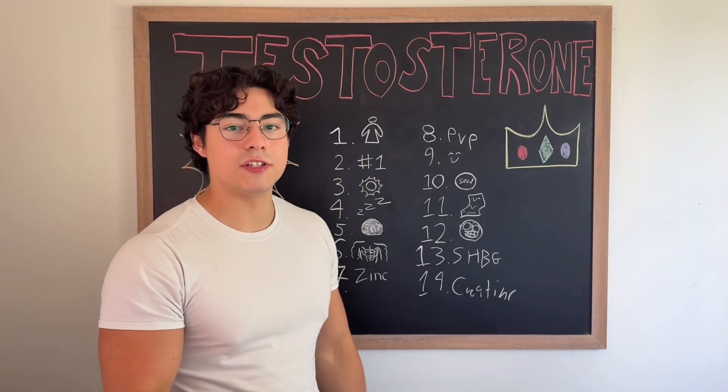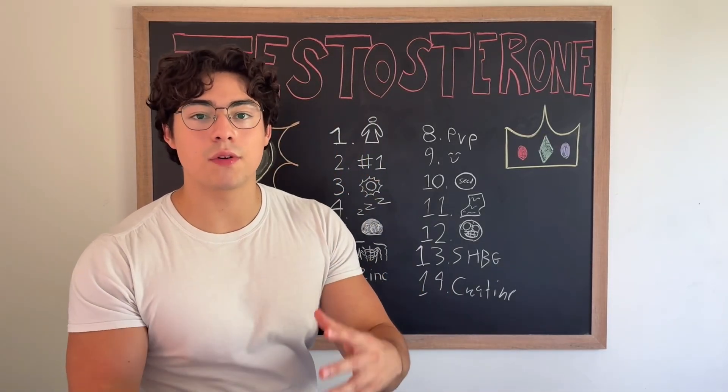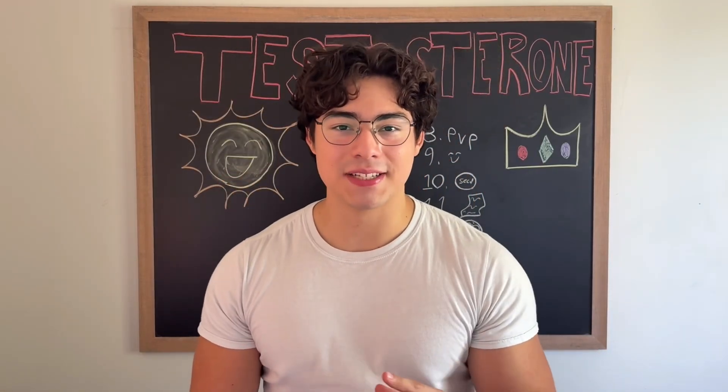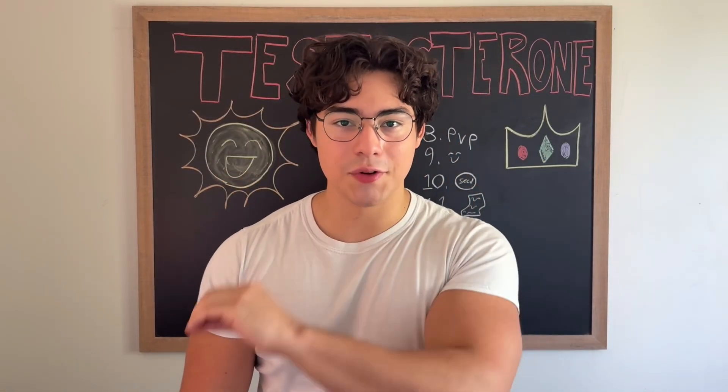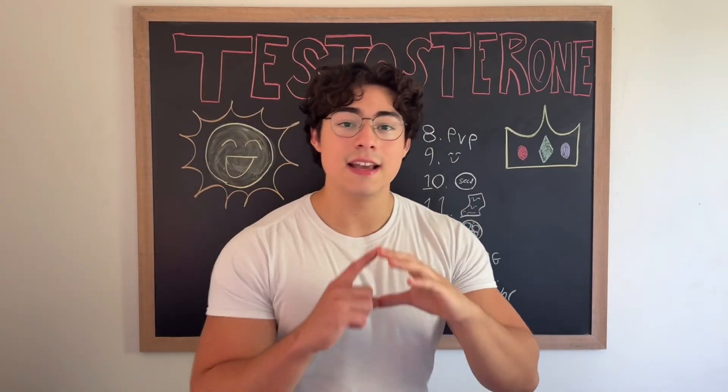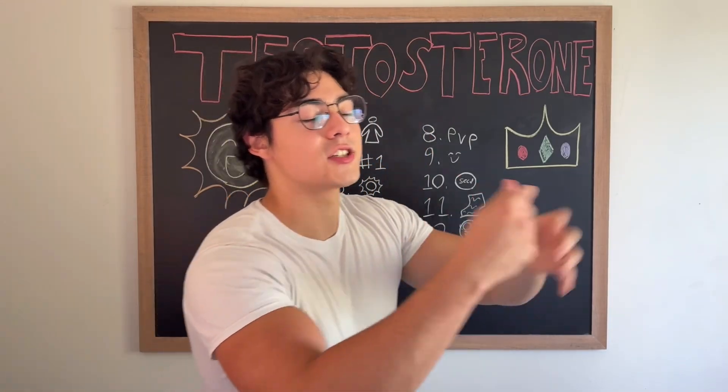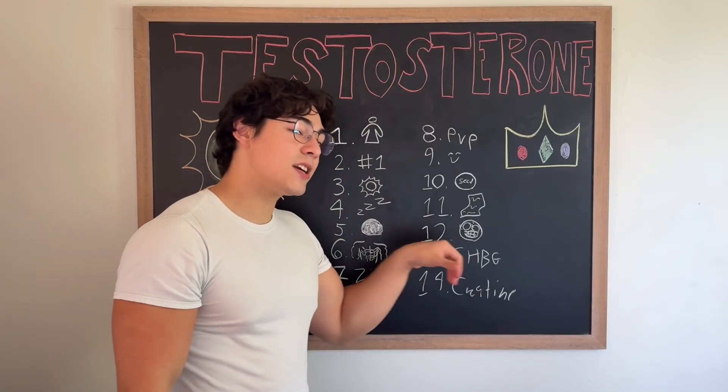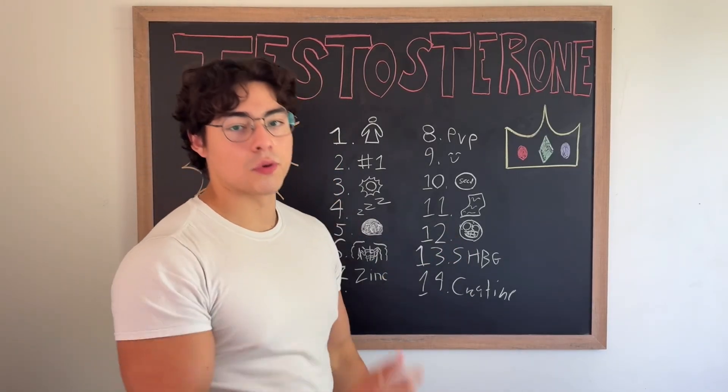If you have lower SHBG, you have more free testosterone from your total testosterone. About one to 3% of your total testosterone is your free testosterone and your free testosterone is what is usable, is what can be actually accepted by the androgen receptors. So you can decrease your SHBG by having a high protein diet.